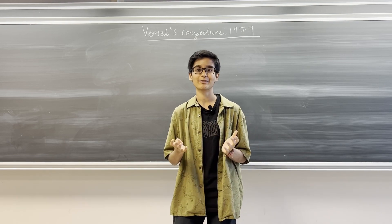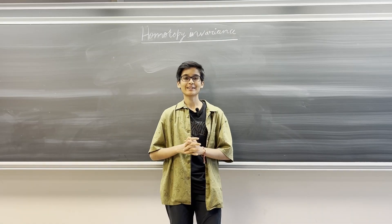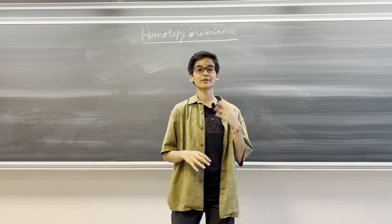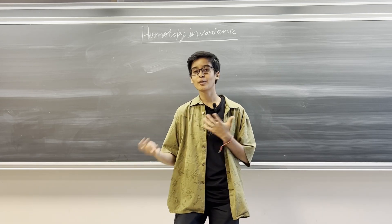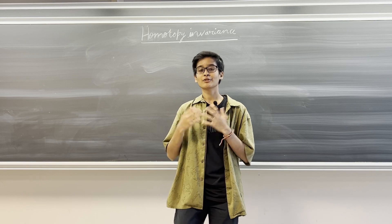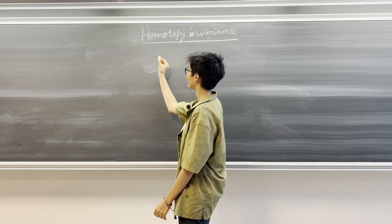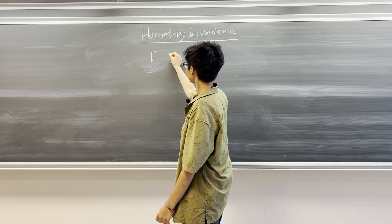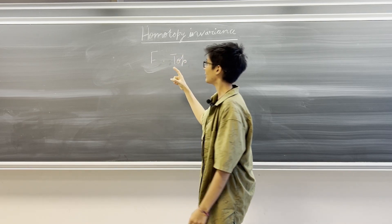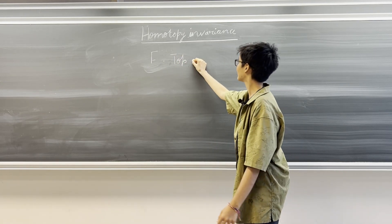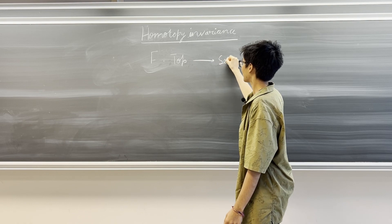Homotopy invariance is the inability of an invariant to distinguish between two objects that are homotopically equivalent to each other. For example, in algebraic topology, let us consider the invariant F that to every topological space gives us a set.